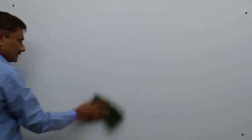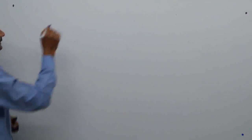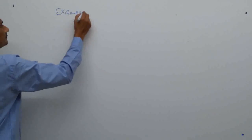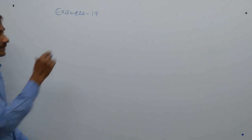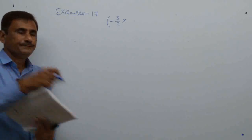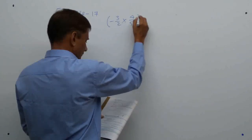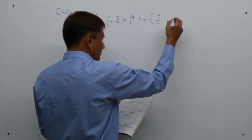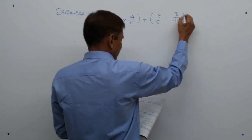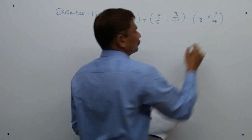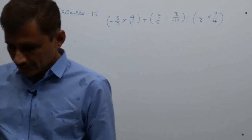Now example number 17. The expression is: (−3/2 × 4/5) + (9/5 ÷ 3/(−10)) − (1/2 × 3/4).